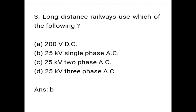Question 3: Long distance railways use which of the following? Options: 200 V DC, 25 kV single phase AC, 25 kV 2 phase AC, 25 kV 3 phase AC. Correct answer is option B: 25 kV single phase AC.